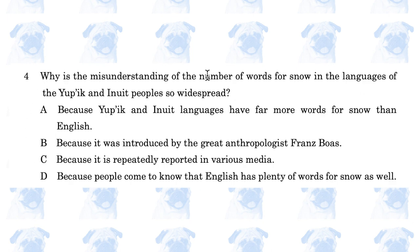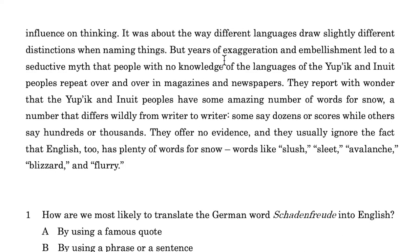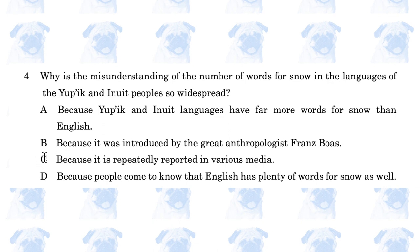Number 4: Why is the misunderstanding of the number of words for snow in the languages of the Yupik and Inuit peoples so widespread? A: because these languages have far more words for snow than English; B: because it was introduced by the great anthropologist Franz Boas; C: because it is repeatedly reported in various media; D: because people come to know that English has plenty of words for snow as well. The passage states years of exaggeration and embellishment led to a seductive myth, and people with no knowledge of these languages repeat it over and over in magazines and newspapers — so the answer is C.